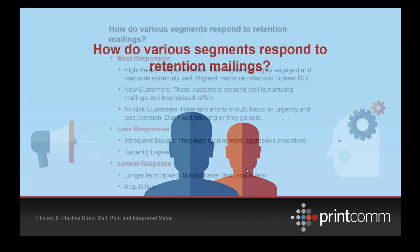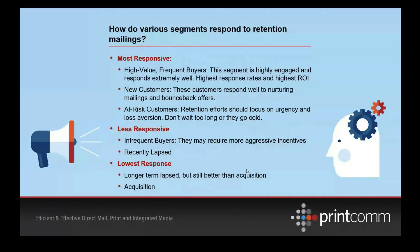Looking at how various segments respond to retention mailings, I put them into three broad categories: most responsive, less responsive, and lowest response. The most responsive are high value, frequent buyers — they're really engaged, and response rates can be very high. In retail goods, I see response rates sometimes in the 7, 8, 9, 10, even 11 percent range depending on segment. In auto service, we used to see response rates in the double digits — 11 to high teens. Auto service gets tons of data on customers, making time-of-need targeting very practical.